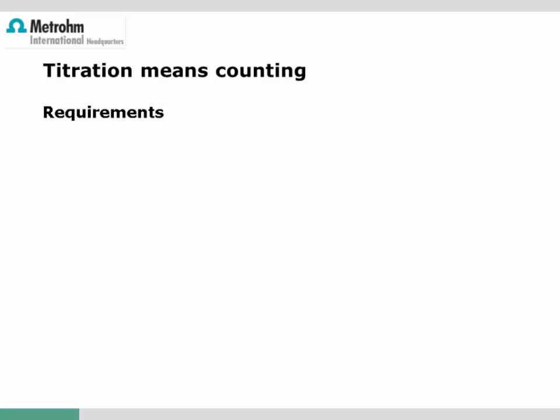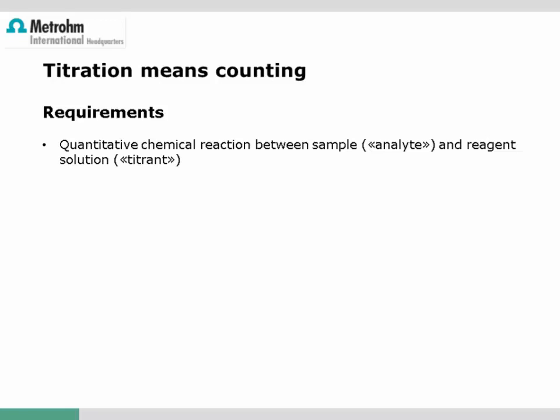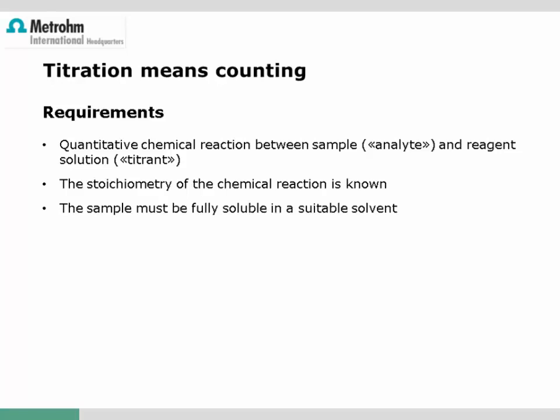Titration is an absolute method — titration means counting of ions or molecules. What are the chemical requirements for a successful titration? Every titration is based on a quantitative chemical reaction of the sample, the analyte, and the reagent solution, the titrant. The stoichiometry of this chemical reaction must be known to calculate the amount of analyte in the sample.